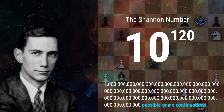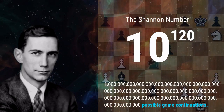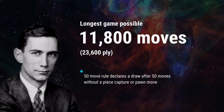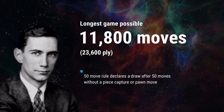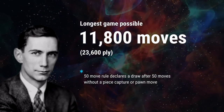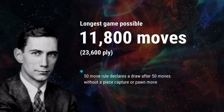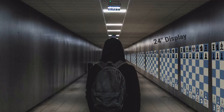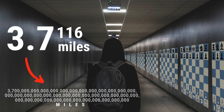If you added the nonsense games, the number would dwarf the lower bound calculation. This is without taking into account that a game can last 11,800 moves because of the 50-move rule, which requires a pawn move or piece capture every 50 moves. How long would it take to see all the sensible games? Well, if we had a hallway filled with 24-inch displays showing every 40-move game, the hallway would span 3.7 to the 116th power in miles.